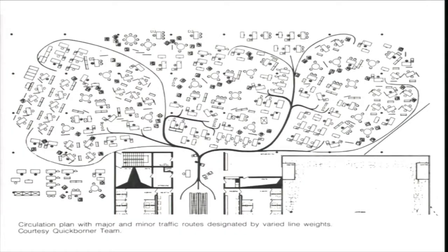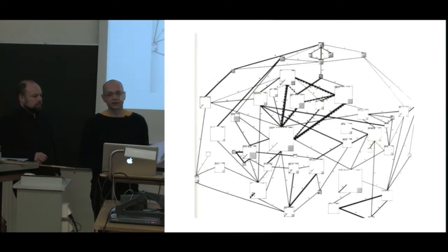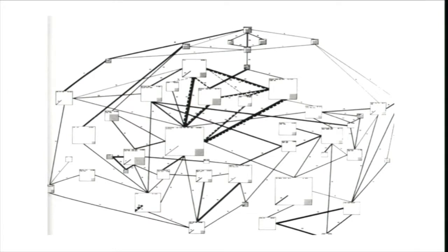This is designed by a consultancy agency called QuickBorner team from Germany. And they developed something they called office landscapes. And the office landscape frees information flows by vast open spaces, populated by temporary clusters of workstations for teamwork. And information exchange is accelerated by a complex network of nodes. You can reconfigure the whole system. And what seems rather random is actually based on a quite complex design process where the QuickBorner team was using these kind of diagrams where the boxes represent different departments and the lines in between represent the connections that these departments need.